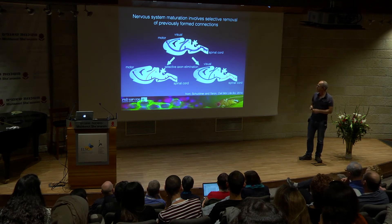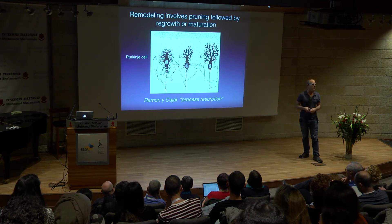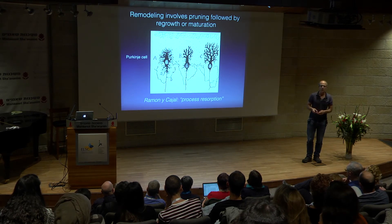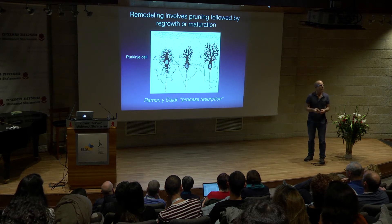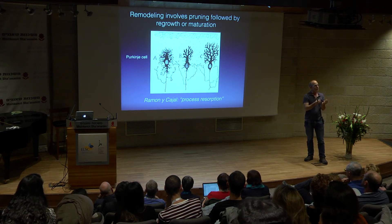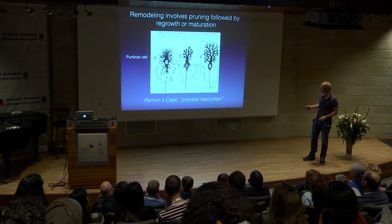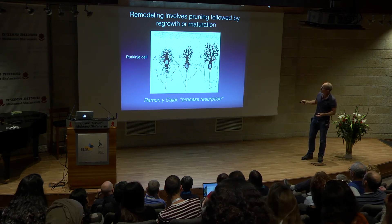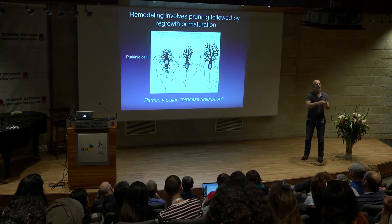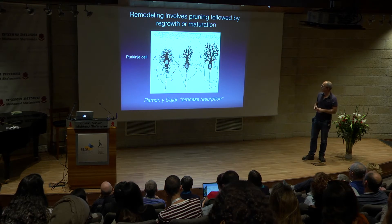Despite the fact that this was discovered about 40 years ago, if you go back to the drawings of Ramon y Cajal, you can see that he knew this already more than 100 years ago. Here you can see he's drawing a Purkinje cell in development—early, later, and later still—showing neurons with very elaborate small dendrites that undergo what he called at the time 'process resorption,' today called dendrite pruning, giving rise to a much smaller dendritic tree that later enlarges and matures to form the adult dendritic tree.